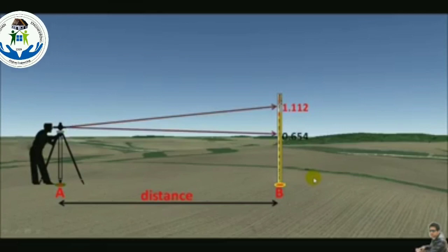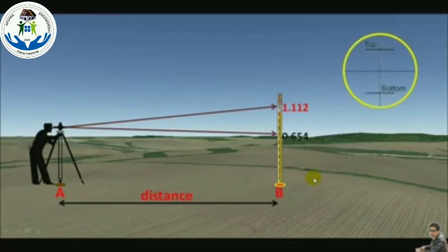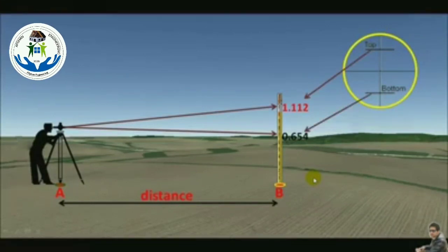Let's say the upper hair reading is 1.112 and the lower hair reading is 0.654 meter.